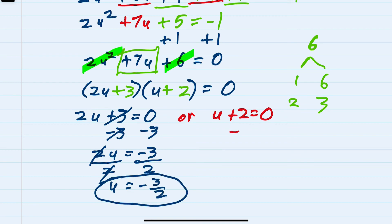From the second, I can subtract the 2 over to the other side of the equation. That leaves me with u equals minus 2.